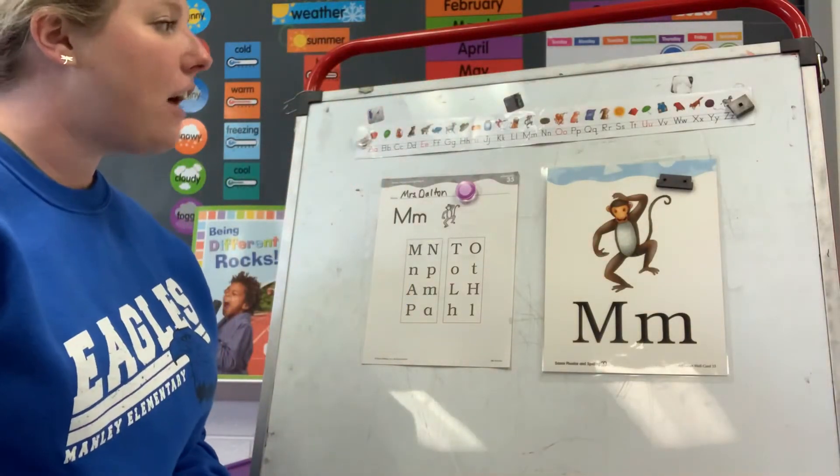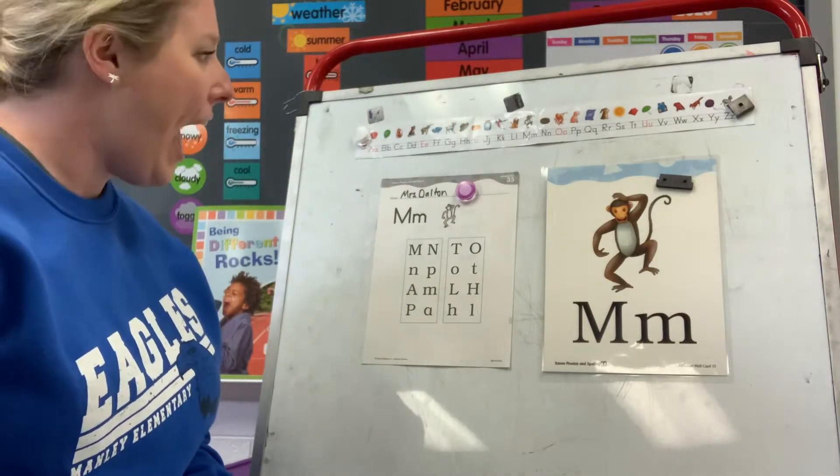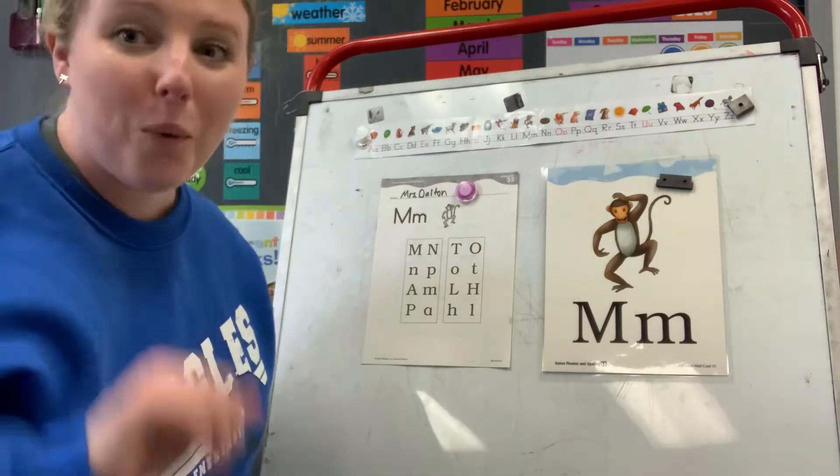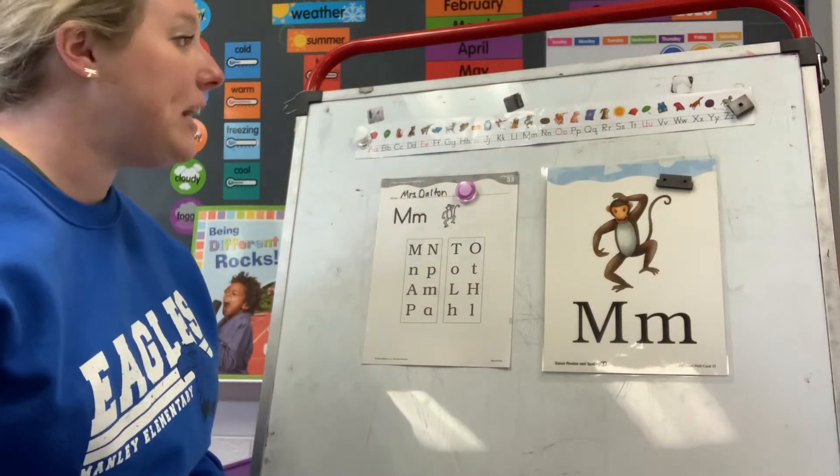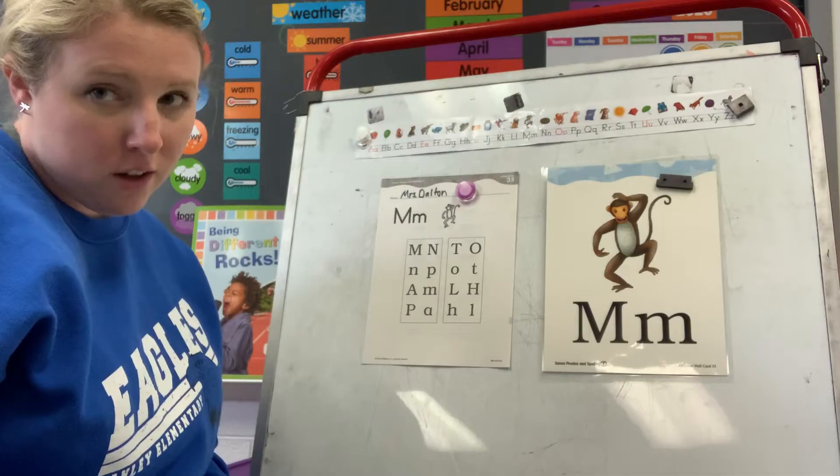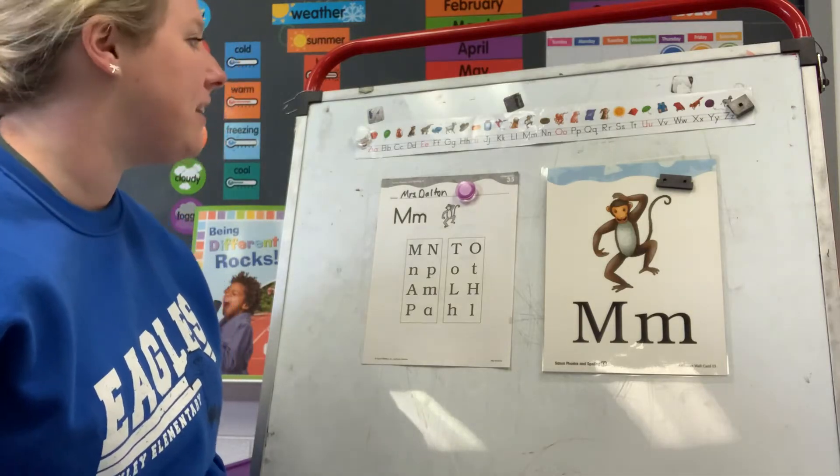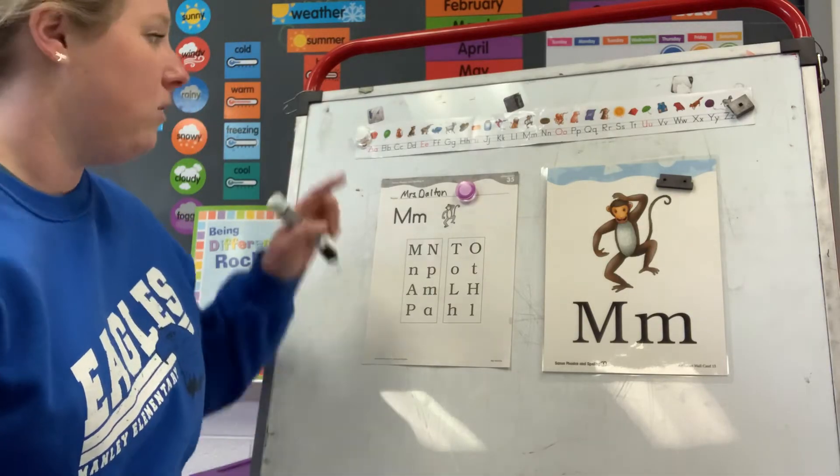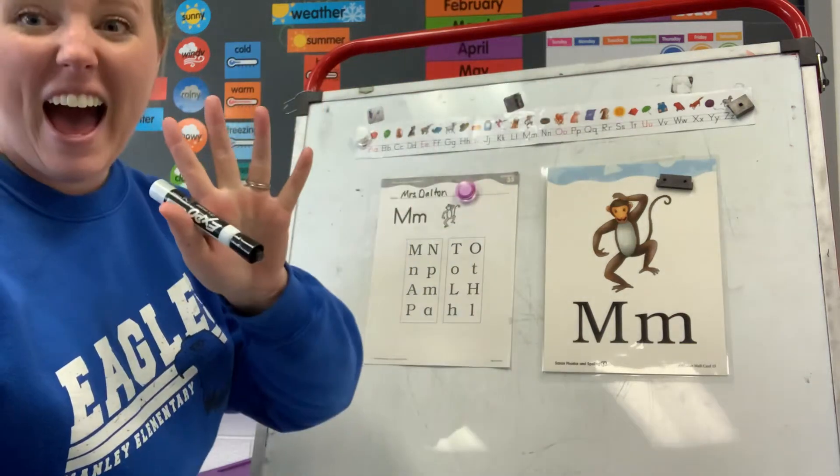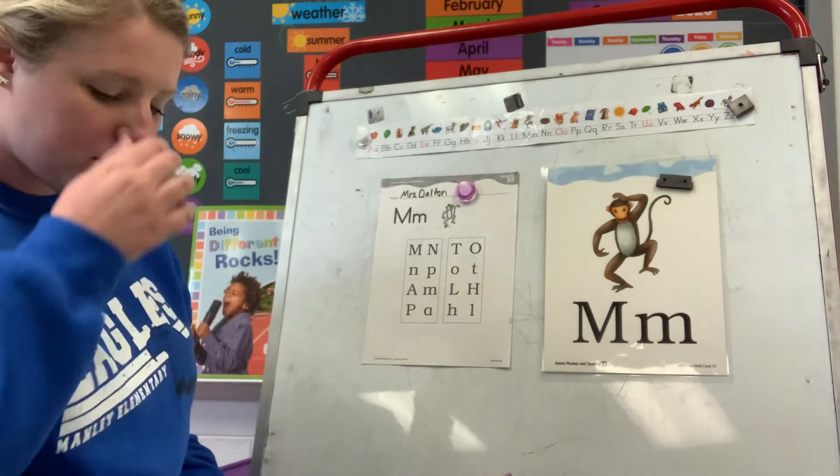Let's take a look at our alphabet handwriting strip. How many letters are in our alphabet? 26, good job. How many vowels are in our alphabet? What color are the vowels? Red, how many red letters are there? Let's count. One, two, three, four, five. There are five vowels, good job.